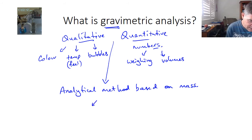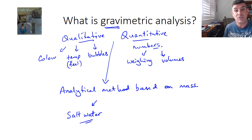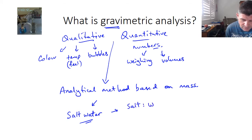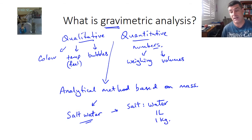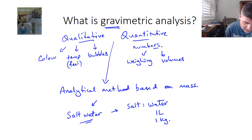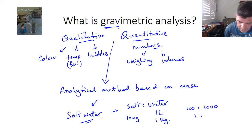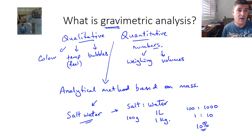For example, if we have a sample of salt water — and we'll be doing an investigation based on some of the beach water around our local area — we can look at the amount of salt compared to the water. If we have one litre of water, which is equivalent to one kilogram (since the density of water is one kilogram per litre or one gram per mL), and the salt is 100 grams, then we have a ratio of 100 to 1000, or 1 to 10 — that is a 10% salt solution, based on comparisons of mass.